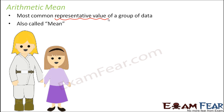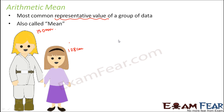So let us take an example. These two sisters have different heights — the younger sister is 128 centimeters and the elder sister is 150 centimeters. They have different heights; one is taller and the other is shorter. Now if I ask you, what would be the average height? Whenever we say what would be the mean of their heights, that actually means we are trying to say: if we assume that both of them are of equal height, in that case what would be each of their heights? So how do we find out their average height?